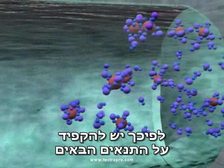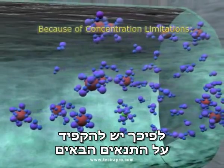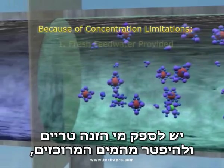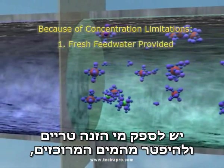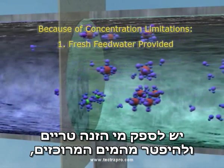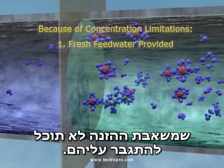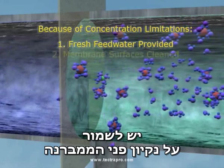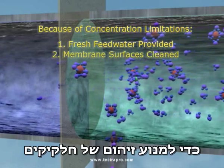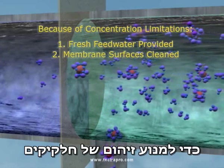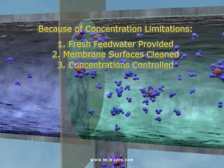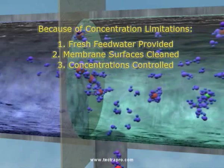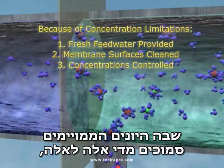Therefore, the following conditions must be maintained to allow reverse osmosis to occur at a reasonable rate. Fresh feed water must be provided and concentrated water discarded to prevent osmotic pressures that cannot be overcome by the feed pump. Membrane surfaces must be kept clean to prevent particle fouling from blocking water passage through the membrane. Concentrations cannot be increased to a point where hydrated ions get too close to one another, causing precipitation and scaling to occur.